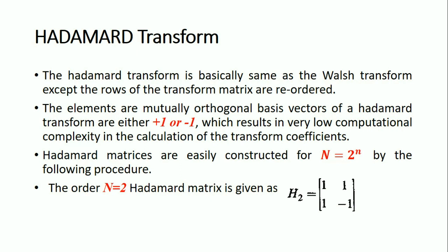The elements are mutually orthogonal basis vectors of a Hadamard Transform and are either plus 1 or minus 1, which results in very low computational complexity in the calculation of the transform coefficients.